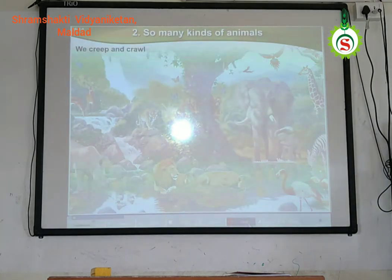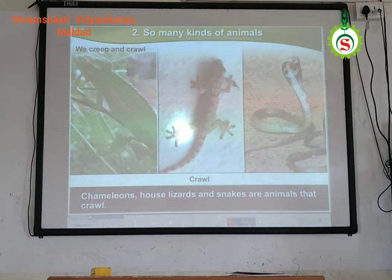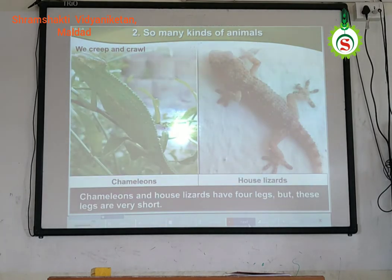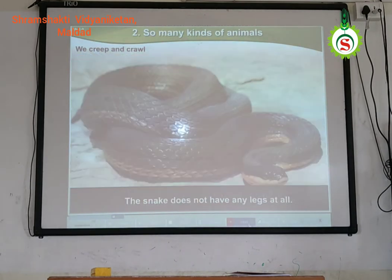We creep and crawl. Chameleons, house lizards, and snakes are animals that crawl. They have scales on their bodies. Chameleons and house lizards have four legs, but these legs are very short. The snake does not have any legs at all.